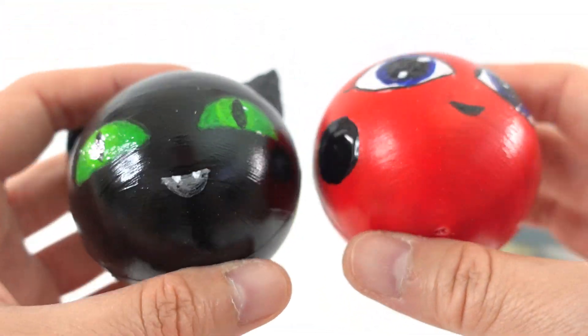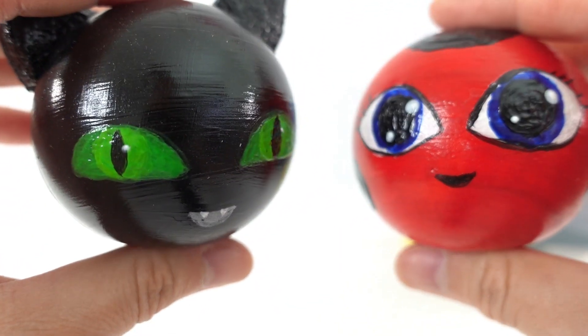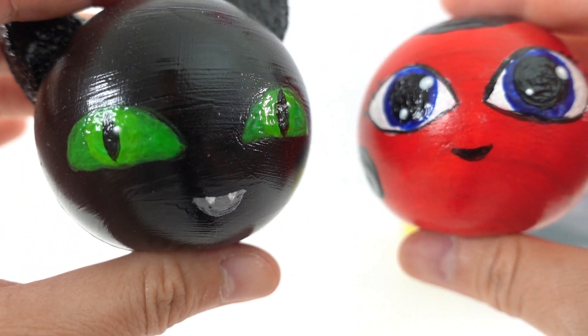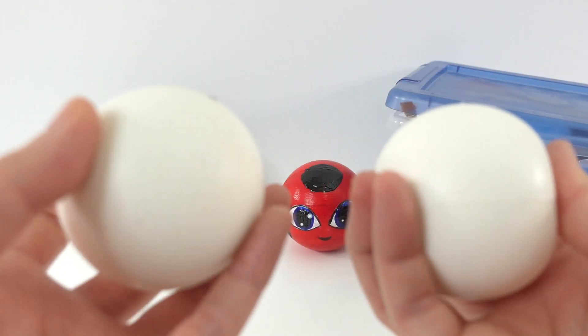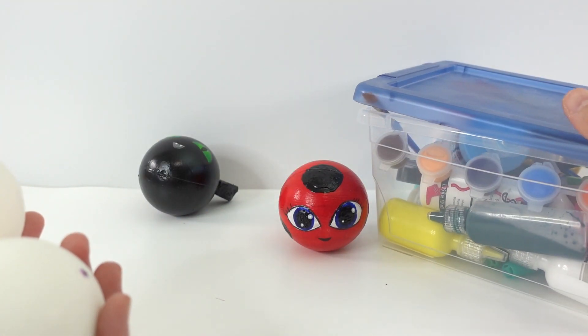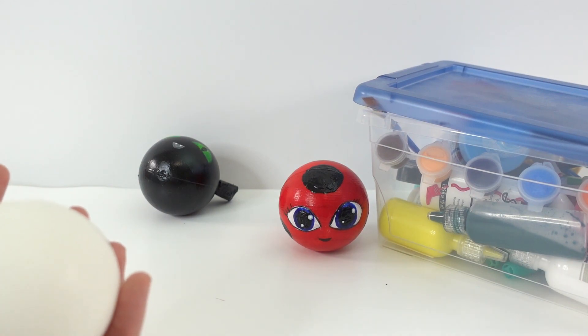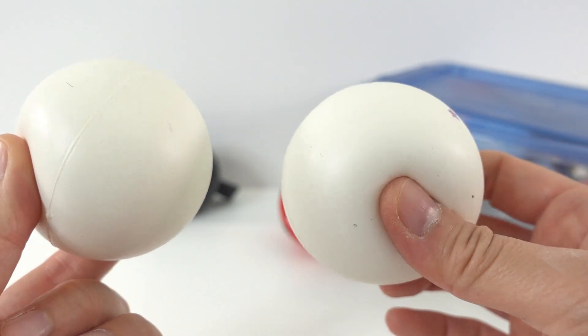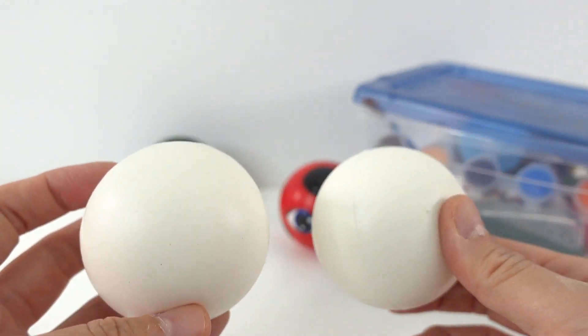These are just little foam balls that we painted with puffy paint. Today I thought we should make two more Kwamis. I have two more blank balls and my puff paint collection, so who do you think we should make next? I think we should make Pollen and Trix.